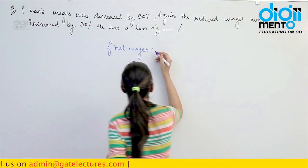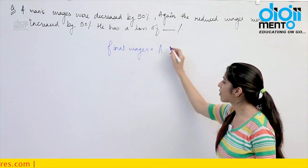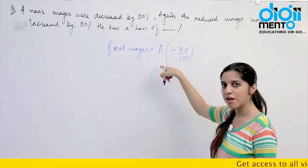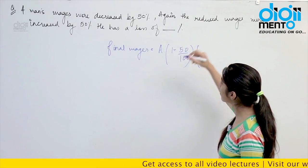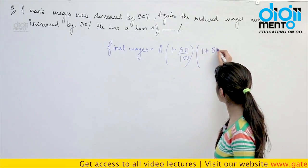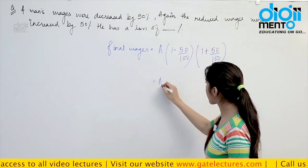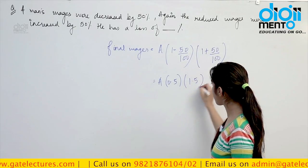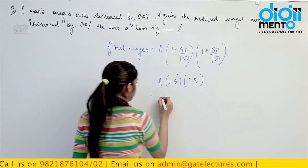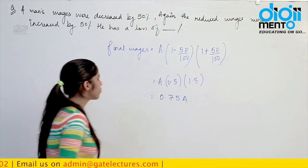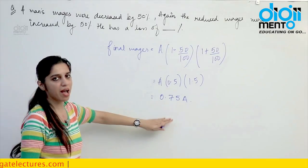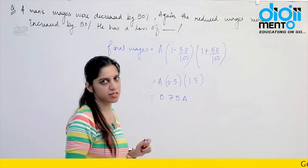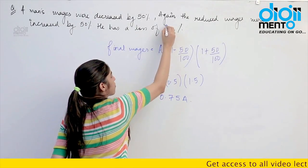Final wages of the man: if his initial wages were A, then firstly he got a decrement of 50%, so I put a negative sign — 1 minus 50%. Then his wages were increased by 50%, so I put a positive sign. This gives 1 minus 0.5 = 0.5, and 1 plus 0.5 = 1.5. Performing this multiplication: 0.5 × 1.5 × A = 0.75A. His original wages were A, now reduced to 0.75A, which means a total loss of 25%.